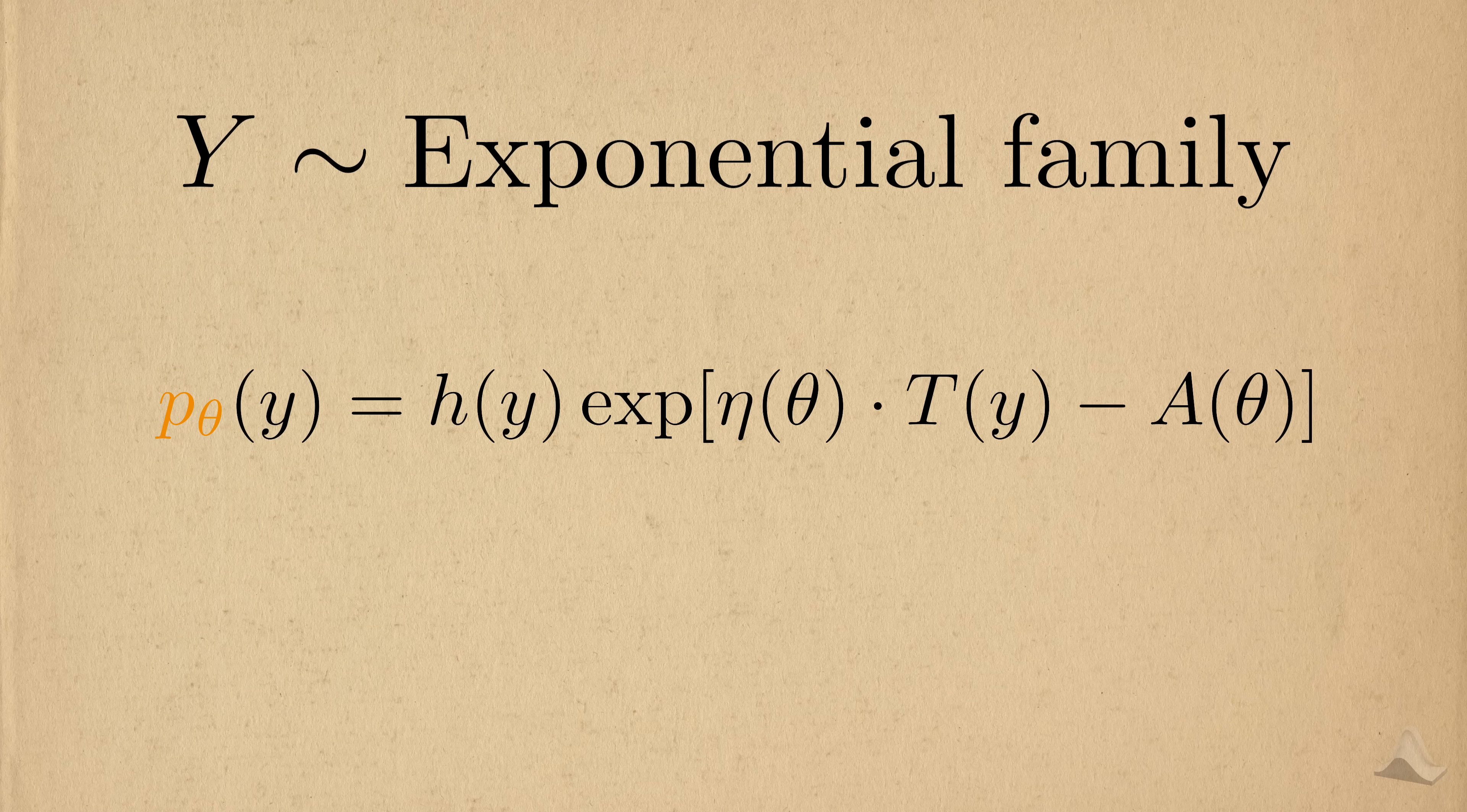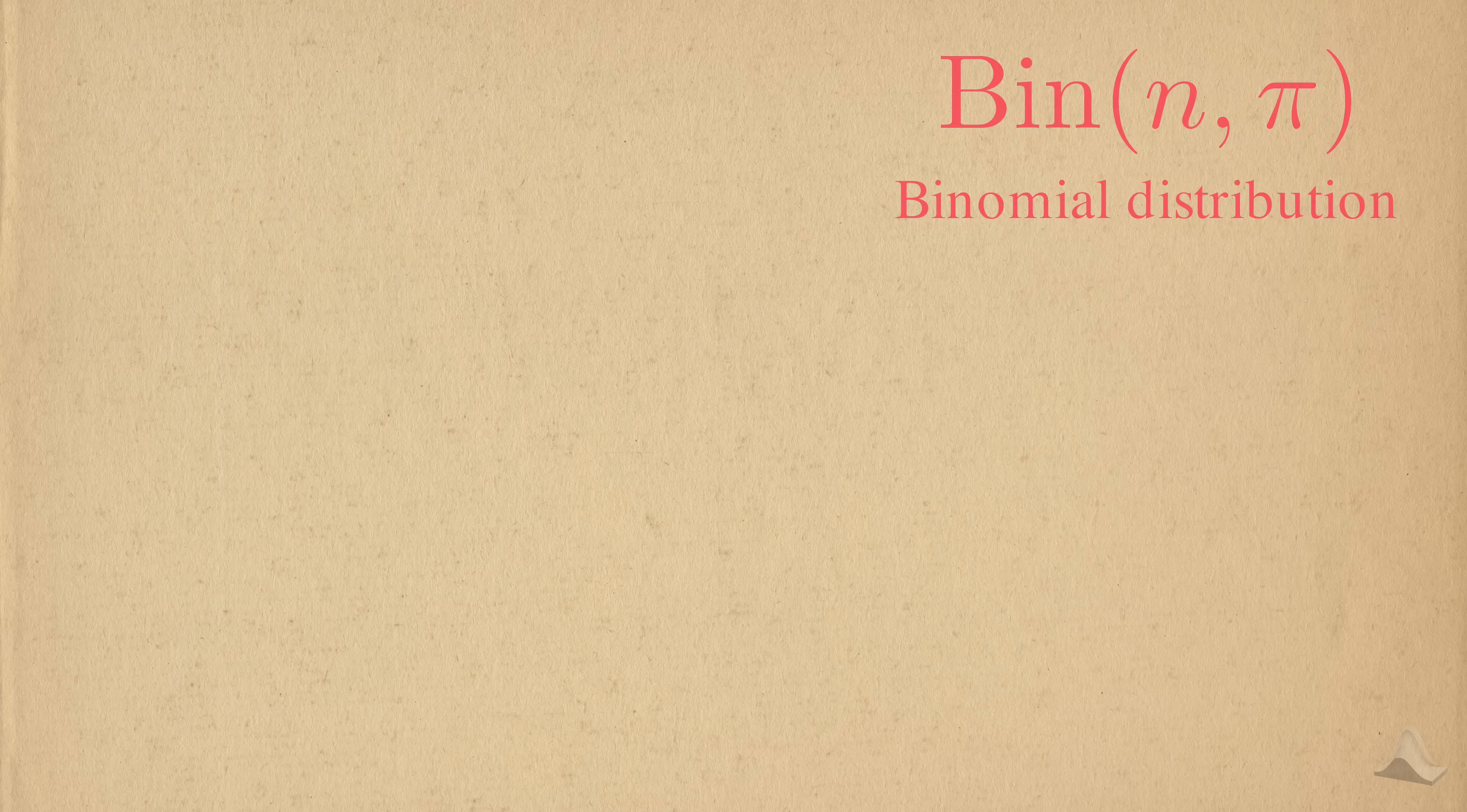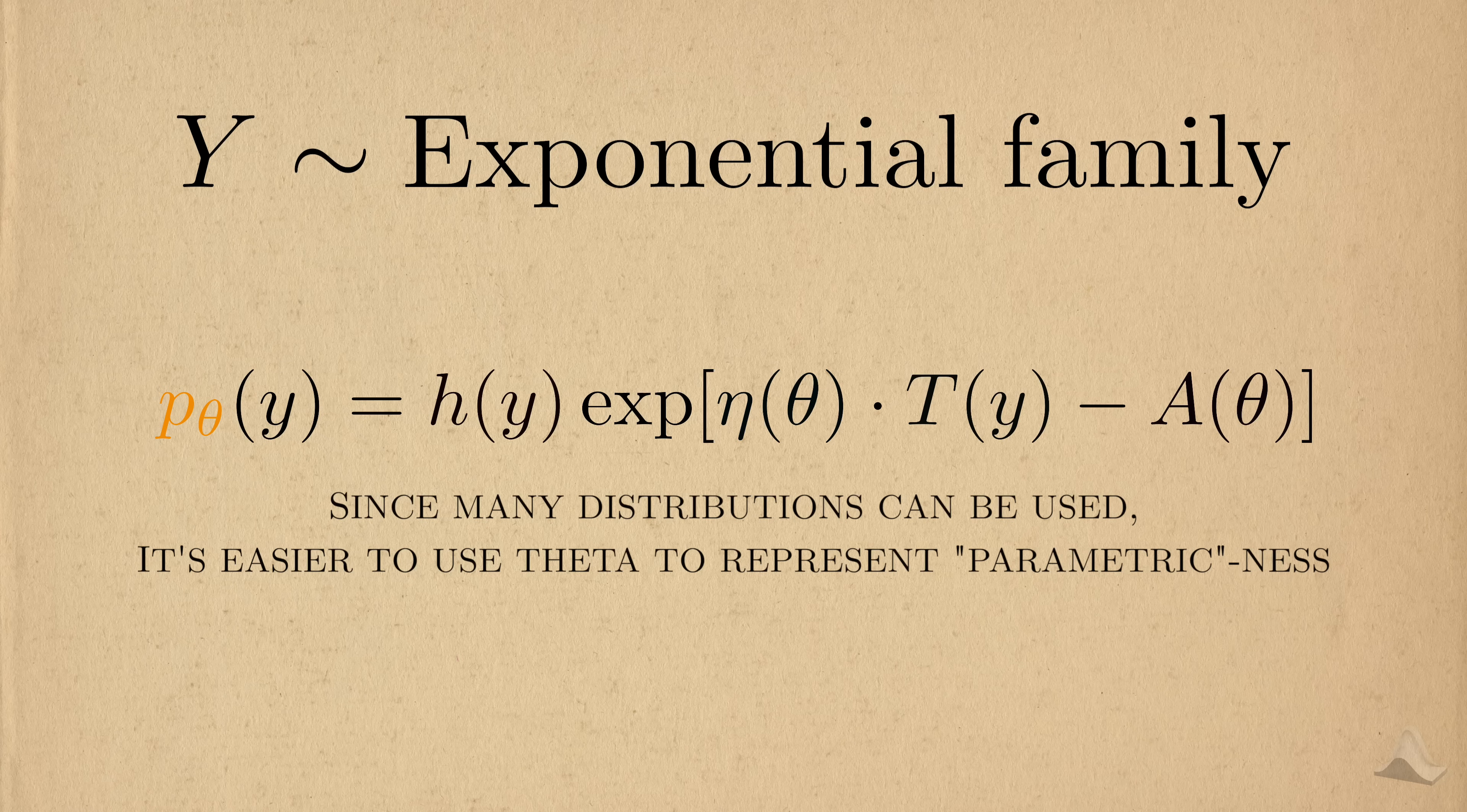First, notice on the left-hand side that there's a theta. In statistics, theta is commonly used to denote a general parameter. In other words, it indicates that an exponential family is parametric. This is important because it conveniently describes the entire shape of the distribution with just a few numbers. For the normal distribution, this is the mean mu and variance sigma squared. For the binomial distribution, the parameter is usually the probability of success pi. Since the outcome could be one of many possible distributions, it's just easier to use theta to represent this general parametric characteristic.